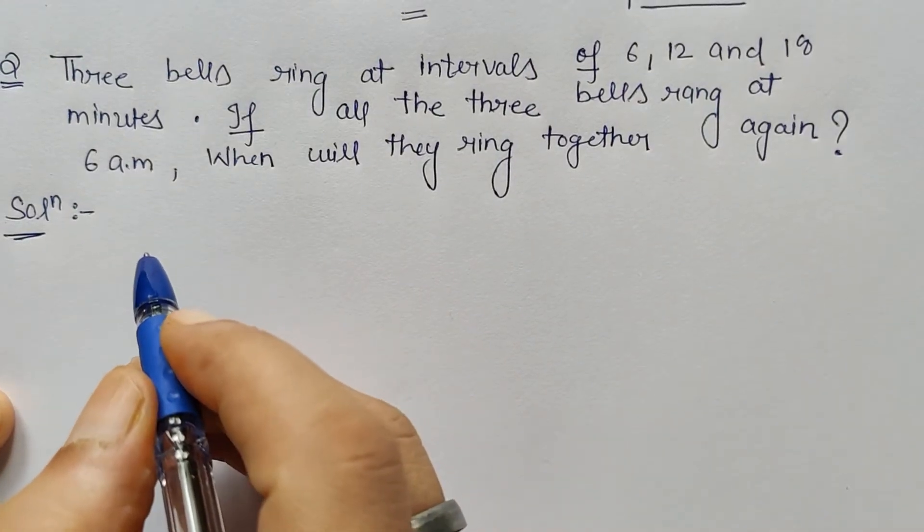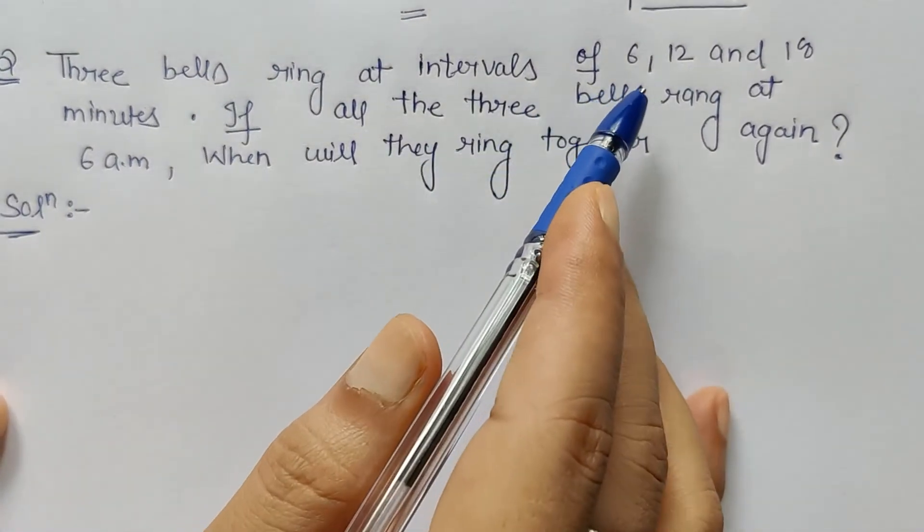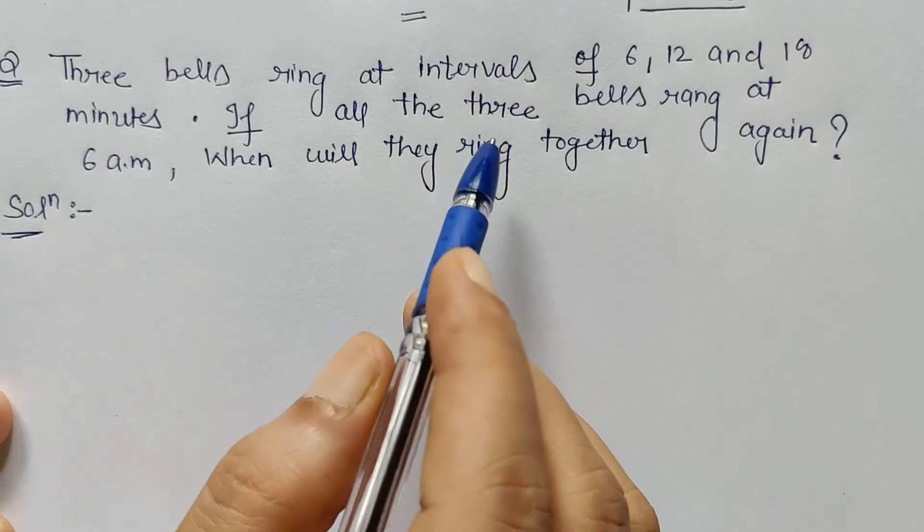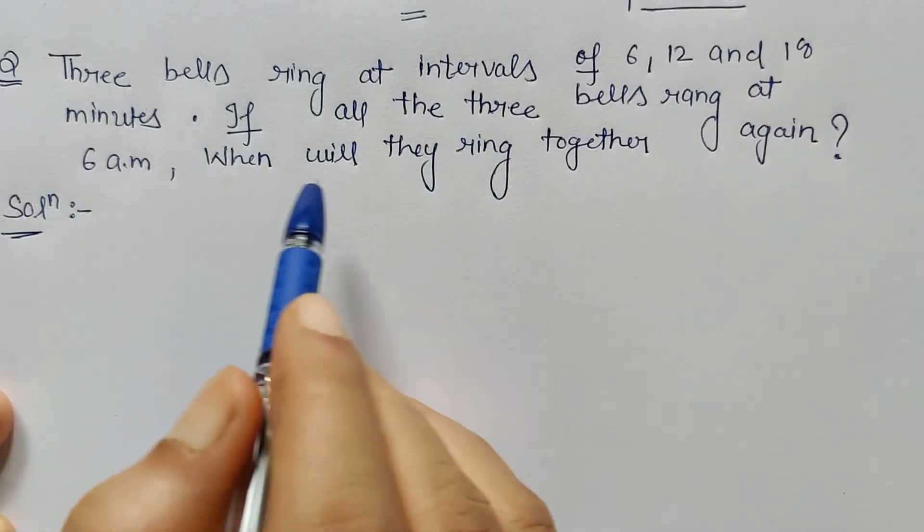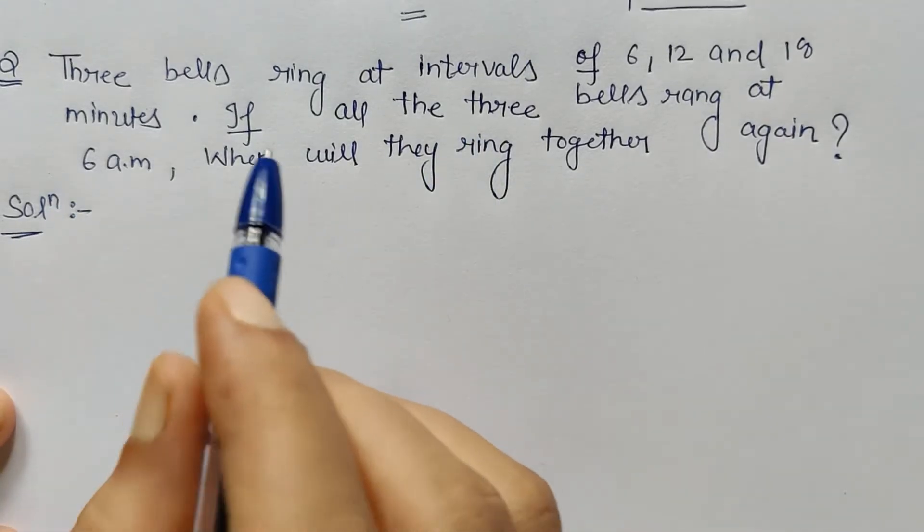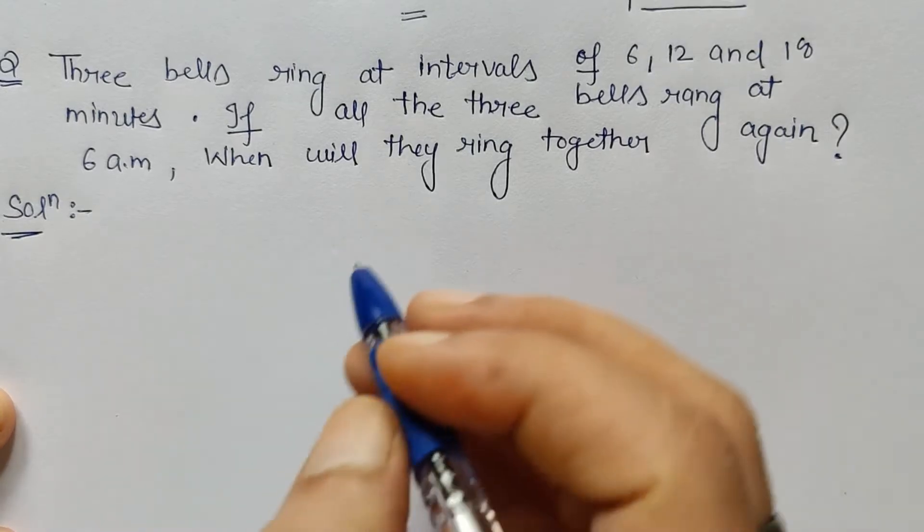Another important question: Three bells ring at intervals of 6, 12, and 18 minutes. If all the three bells rang at 6 a.m., when will they ring together again? For such problems, we just have to find the LCM.